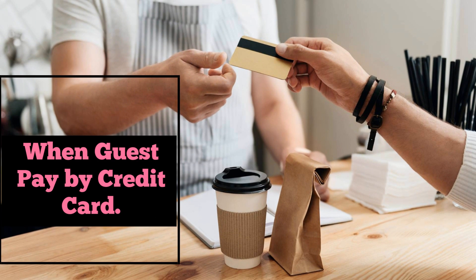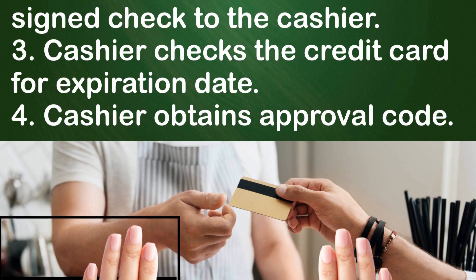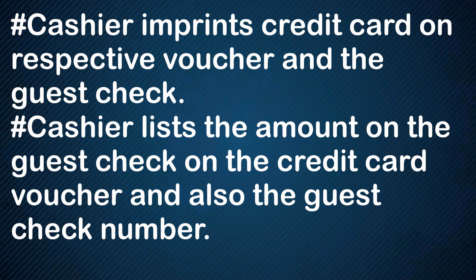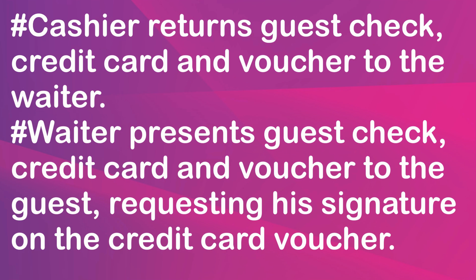When guest pays by credit card: request the guest to sign the check and obtain the credit card. Waiter takes the credit card and signed check to the cashier. Cashier checks the credit card for expiration date and obtains approval code. Cashier imprints credit card on respective voucher and the guest check. Cashier lists the amount on the guest check on the credit card voucher and also the guest check number. Cashier returns guest check, credit card, and voucher to the waiter.